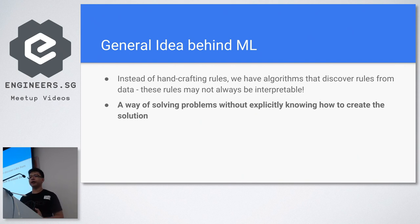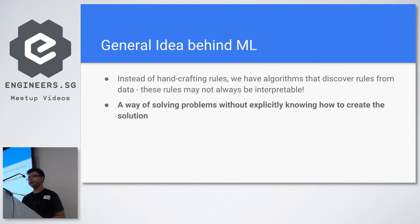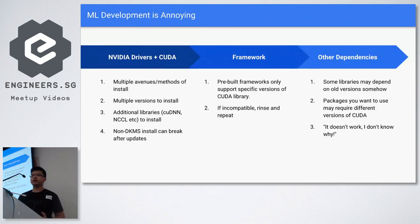The general idea behind machine learning is that instead of handcrafting rules for a program, we have algorithms able to discover those rules from data. In other words, machine learning lets us solve problems without explicitly knowing how to create the solution. One problem is that sometimes we don't understand the solution - the rules may not be interpretable - which matters in industries like finance where you need to justify decisions. Deep learning is a subset centered around deep neural networks requiring lots of computational power, which is where GPUs come in.